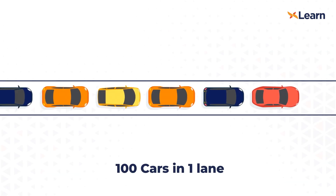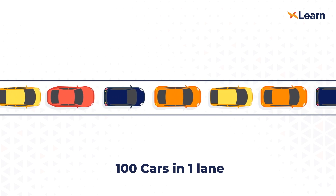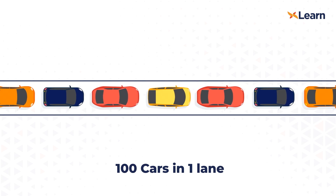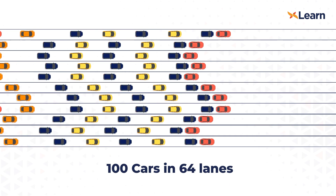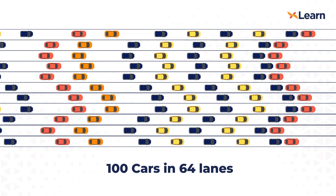Ethereum 2.0 will also introduce sharding. Sharding is basically taking the load off the Ethereum main blockchain and distributing it to 64 new chains, increasing scalability from 30 transactions per second to thousands of transactions per second. Imagine 100 cars going from Bombay to Pune on only one lane — there would be a lot of traffic and congestion. Now imagine 64 lanes from Bombay to Pune — how efficient and fast that would be. Likewise, Ethereum 2.0 is focused on becoming more scalable, more sustainable and more secure.